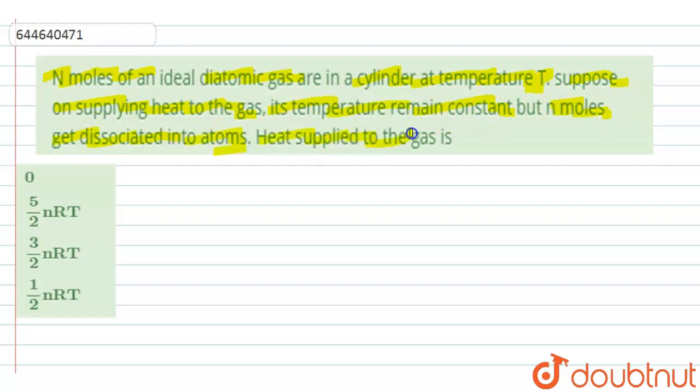Now we have to find the heat supplied to the gas, and these are the given options: 0, 5/2 nRT, 3/2 nRT, and 1/2 nRT.